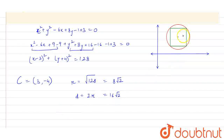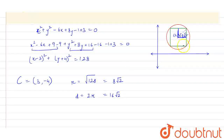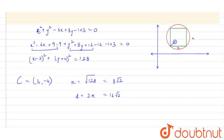From here, we have the center at (3, −4) and the radius 8√2. Now, since the square is inscribed in the circle and its sides are parallel to the coordinate axis, the diagonal of the square equals the diameter of the circle. Let us take the side of the square as x. Since all sides of a square are equal, both sides meeting at a corner are x, and the diagonal is the diameter 16√2. We can find x using the Pythagorean theorem.